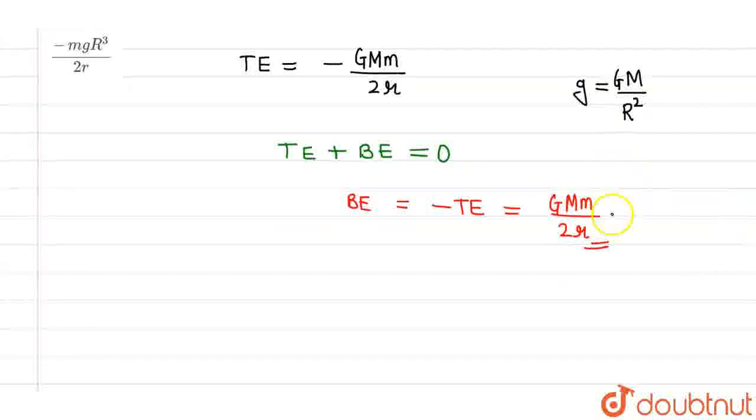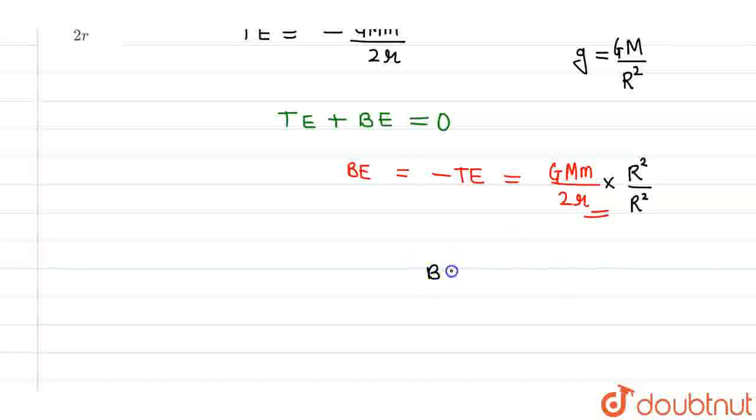To convert this, I'll multiply and divide by r². The binding energy equals (GM/r²) times (mr²/2r). Since GM/r² is small g, this becomes mgr²/2r. This is the binding energy.